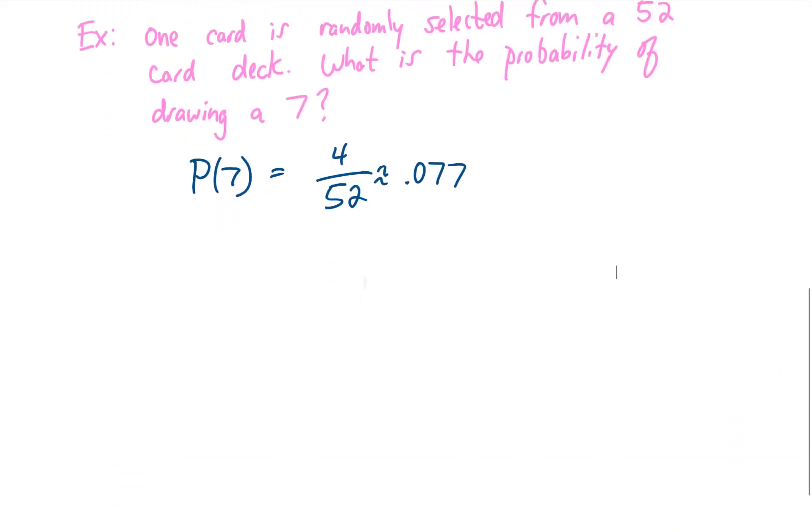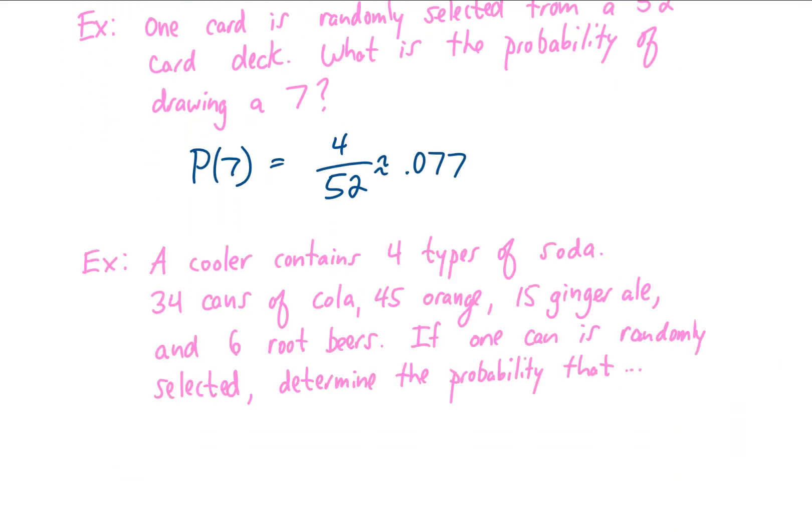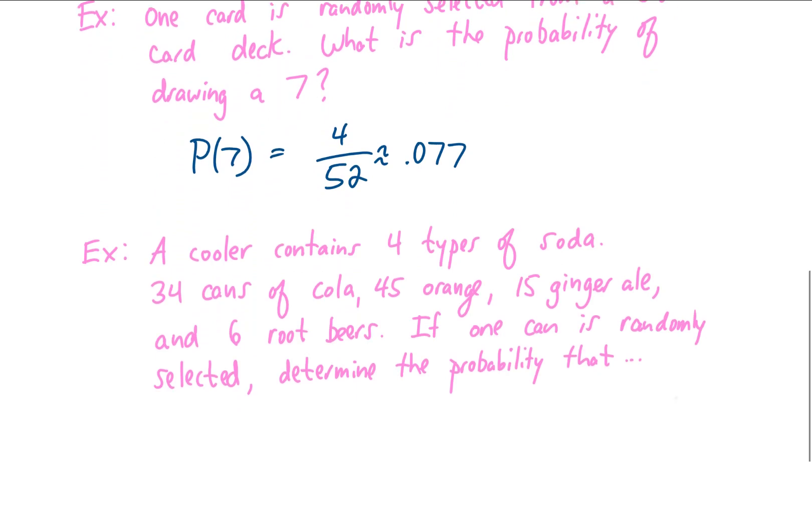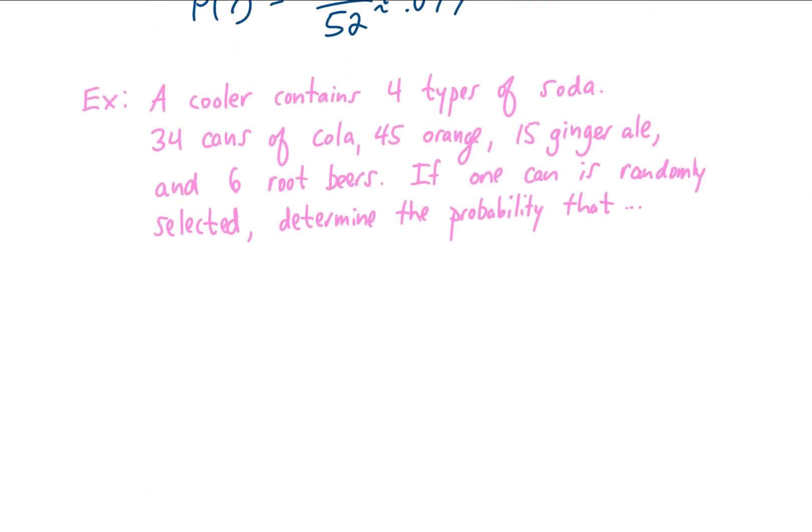Let's look at another example. We have a cooler that contains 4 types of soda. There are 34 cans of cola, 45 cans of orange soda, 15 cans of ginger ale, and 6 root beers. If one can is randomly selected, determine the probability, and then we can ask several questions.